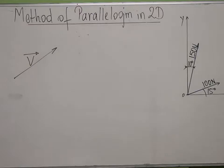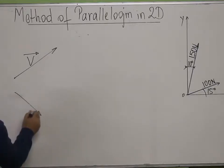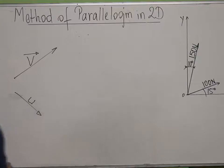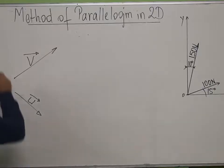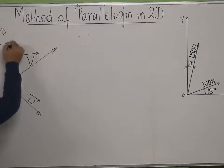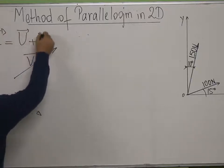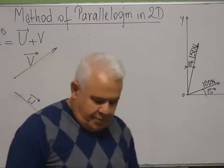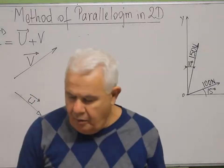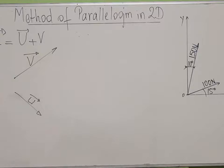...and I want to add another vector to it, U for example, there is a method called the method of the parallelogram that allows me to find what we call the resultant of these two vectors: R equals U plus V. To do that is simple — I have to join the two tails together.